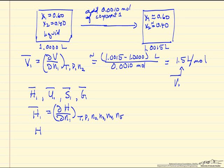And again, the same idea, H, the enthalpy for the mixture per mole, is the sum of the mole fractions times the partial molar quantities of the species.